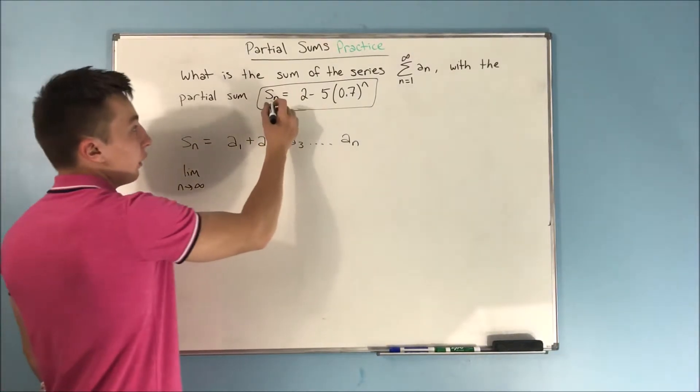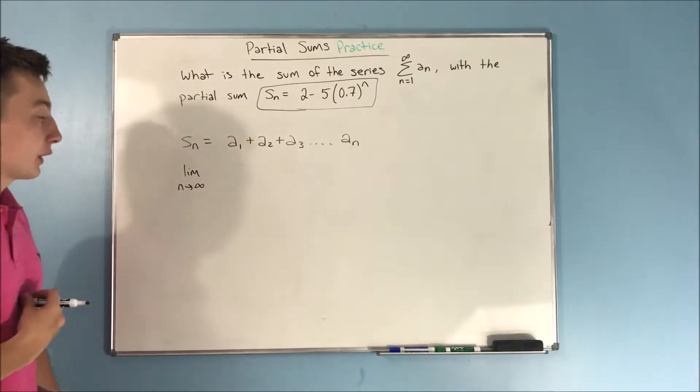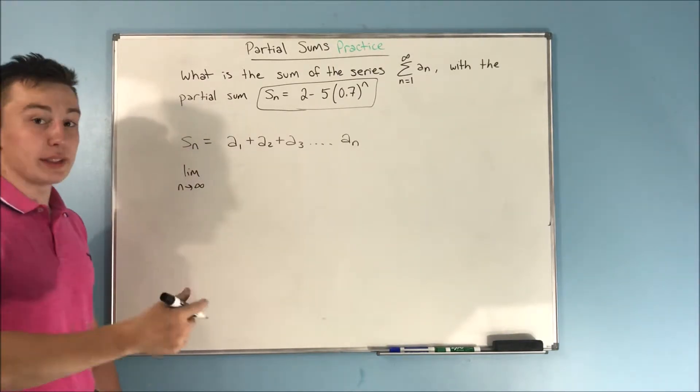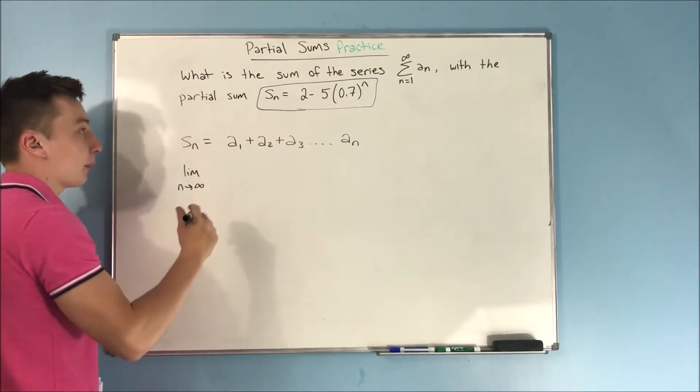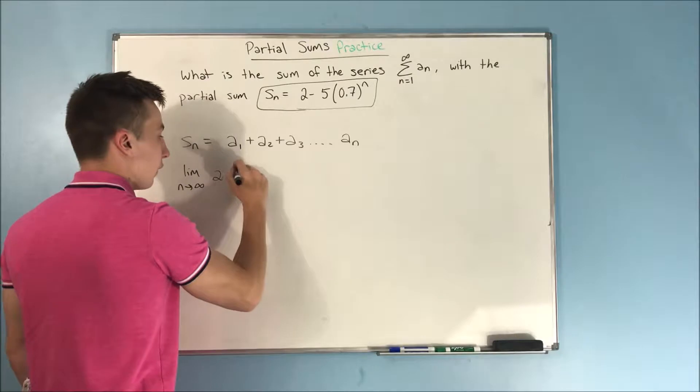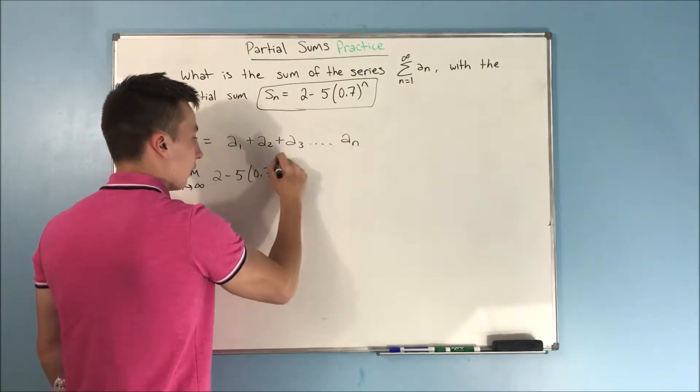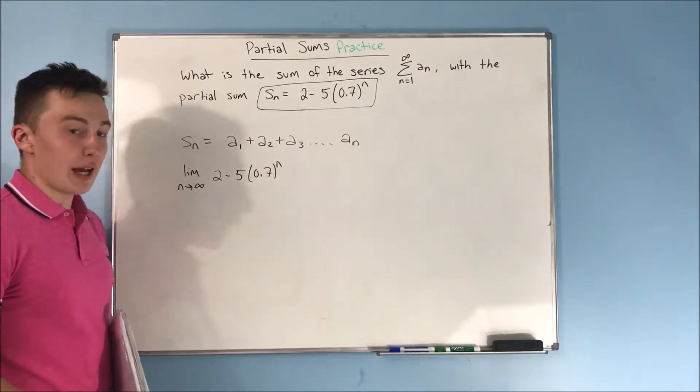And we already have that expression for, or that equation for our partial sum, or I guess you could say our nth partial sum. So if we take the limit as n approaches infinity, now we want that 2 minus 5 times 0.7 to the n, to be, we're going to take the limit of that.